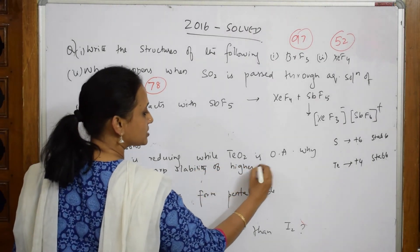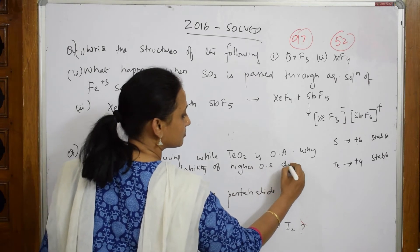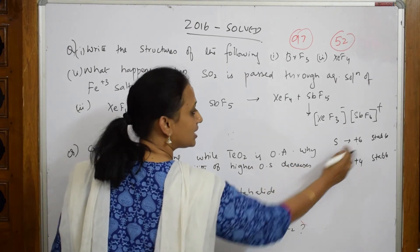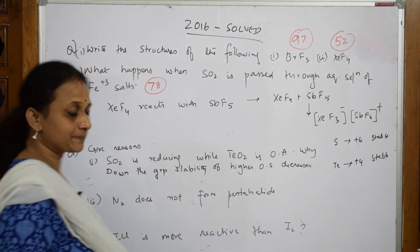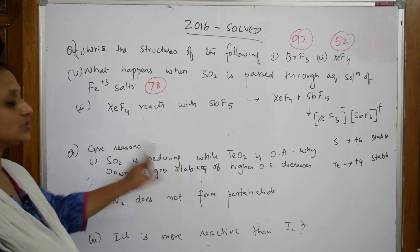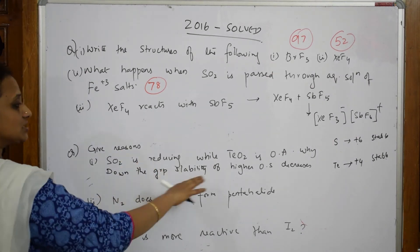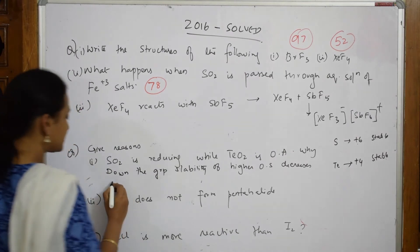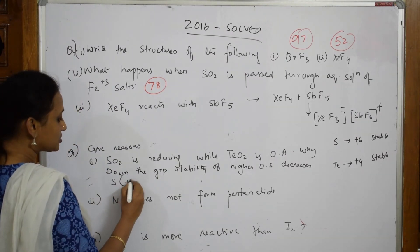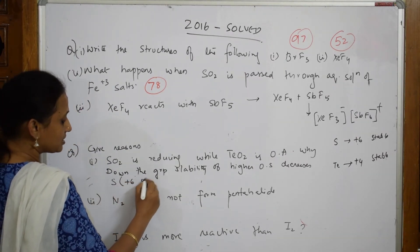How should you write? Down the group, stability of higher oxidation state decreases. When it is higher, it has lost the most, so it's reducing. For sulfur, the stable oxidation state is +6. For tellurium, stable oxidation state is +4.